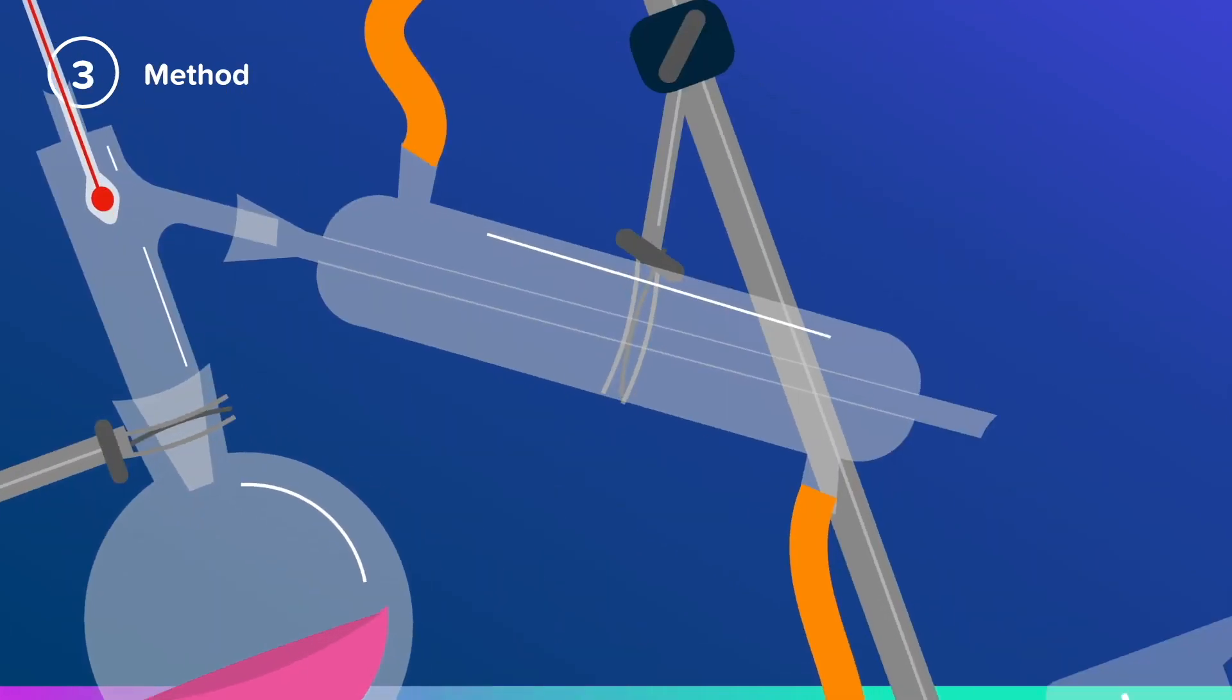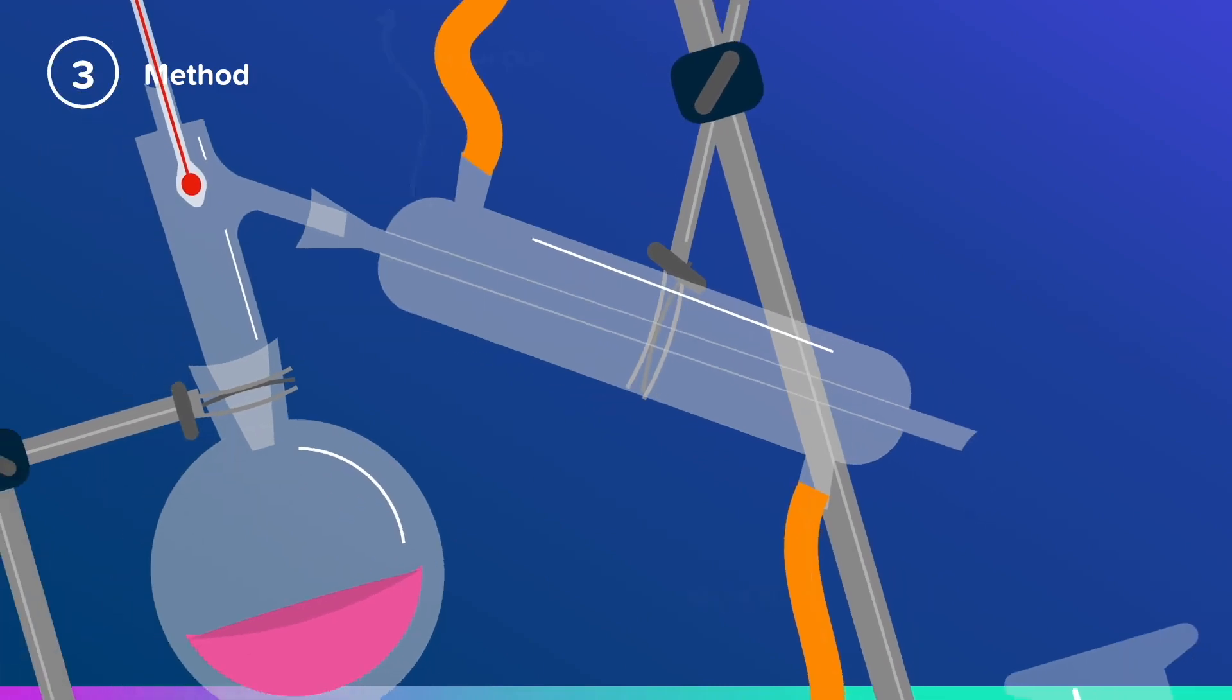Let's look at the condenser in a little bit more detail. Make sure that water is flowing in at the bottom and coming out at the top.